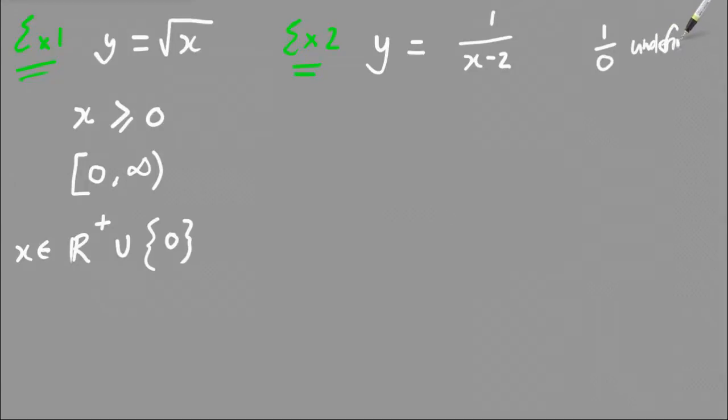So undefined, and that's always the answer you need to give when you have anything divided by 0. And so because x can't equal 2, but it can equal any other number, the domain for that would be all real numbers except for the value 2. And that's what this backward slash means, except for or excluding. So all reals excluding the value 2.